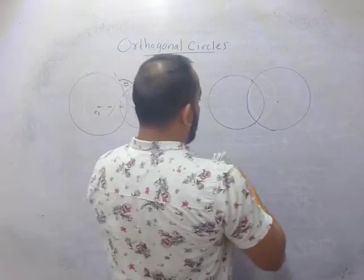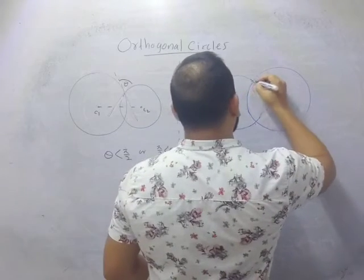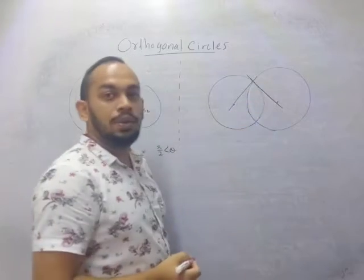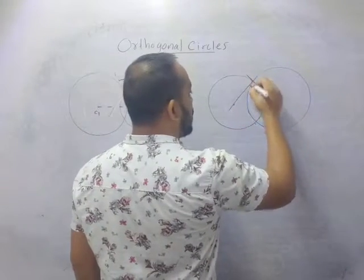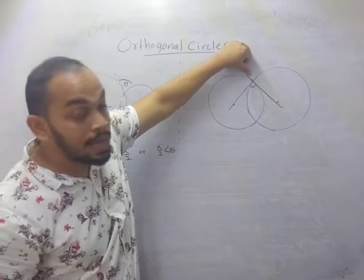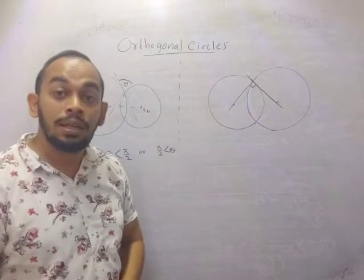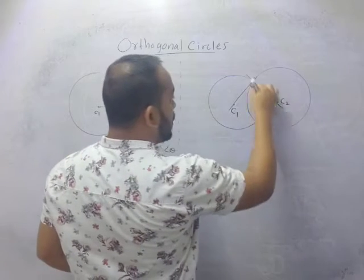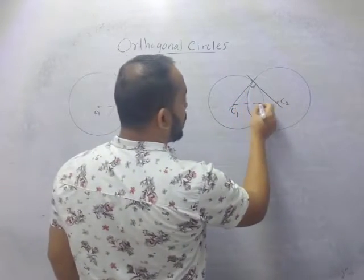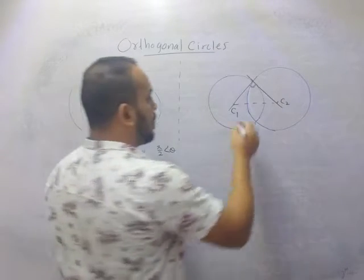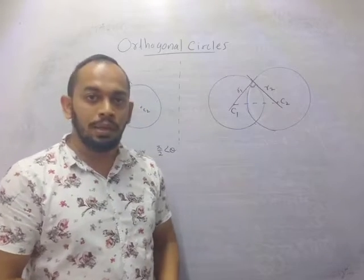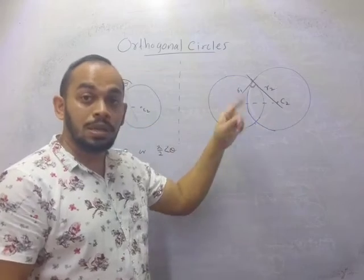There is another possibility: when two circles are intersecting, the tangent lines will be perpendicular to each other. Now if this tangent line is perpendicular to this tangent line, it would be the normal line to the other circle's tangent. If it is normal, then it will definitely pass through the center of the other circle. Suppose this is c1 and this is c2 - then this would pass through c2 as well. So something awesome happens here. This radius is r1, this radius is r2, and these two circles are called orthogonal circles, because the tangent lines drawn at the point of intersection are perpendicular to each other.